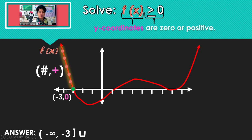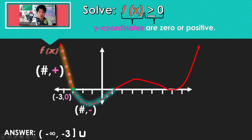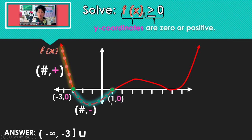Continuing to look from left to right — all of the points along this section have negative y-coordinates, so those are not in our solution. Back to the x-intercept: this time we're going to include 1, because the y-coordinate is 0 and we want y-coordinates that are 0 or positive.